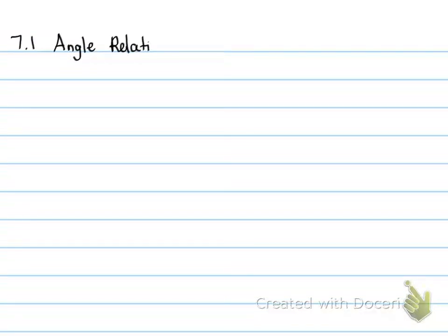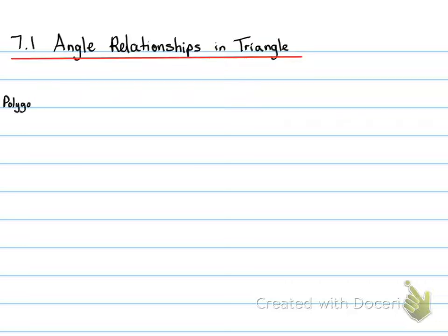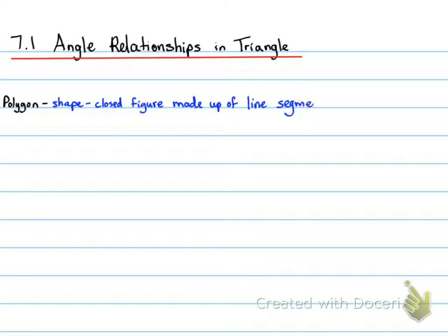7.1 Angle Relationships in Triangles. When we're looking at angle relationships in triangles, we have to understand what a triangle is. A triangle is part of the polygon family. A polygon is a shape — a closed figure made up of line segments. So another word for polygon is the word shape; any shape is considered a polygon.